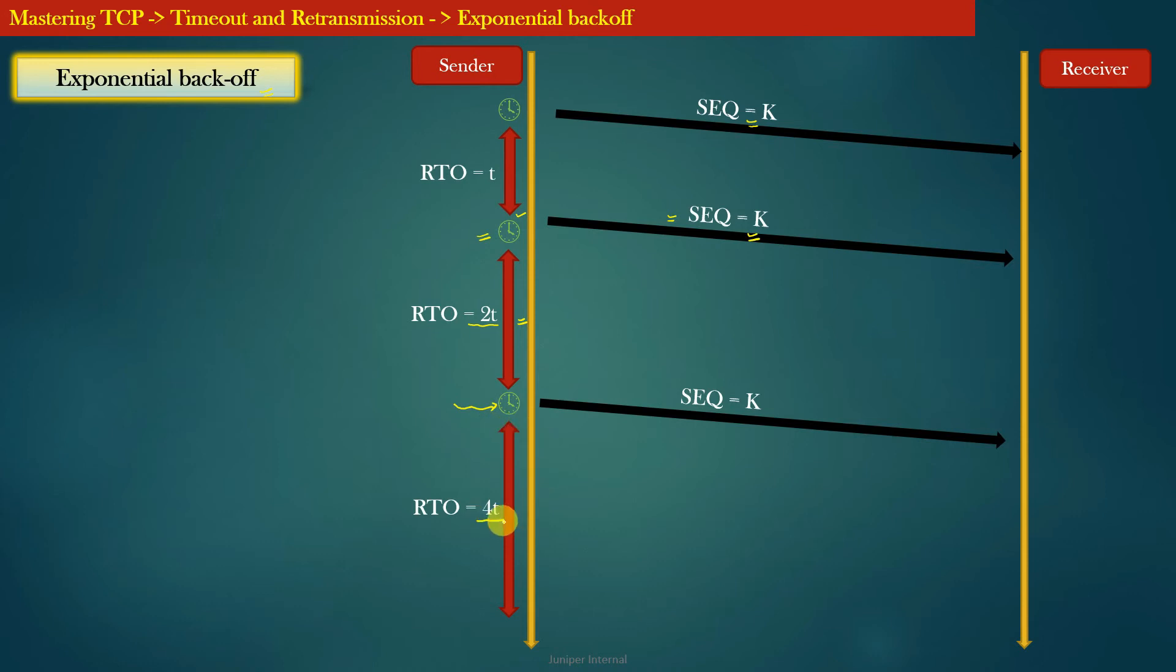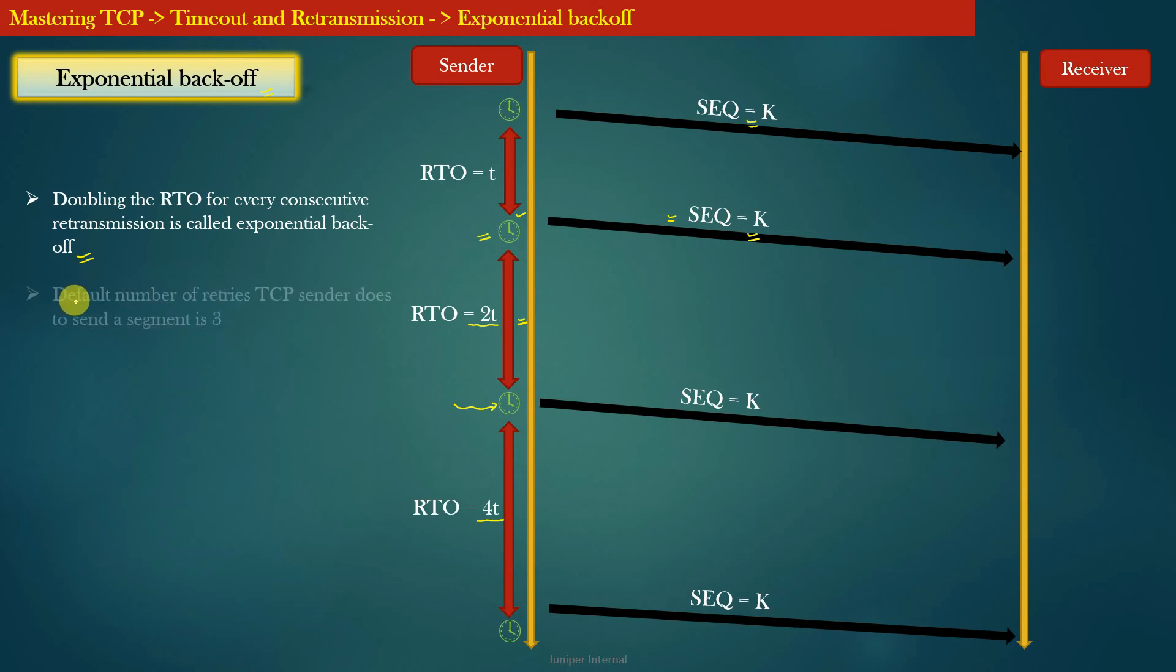And this time the value of RTO is again doubled from the previous, and this continues. So you can see that doubling the RTO for every consecutive retransmission is called exponential backoff.